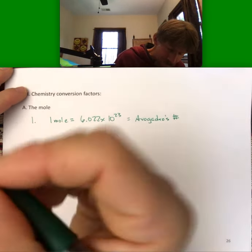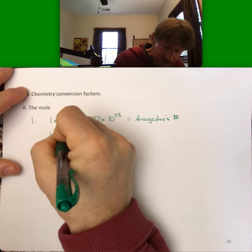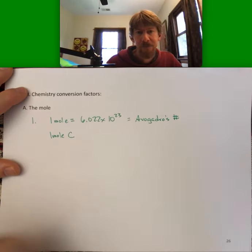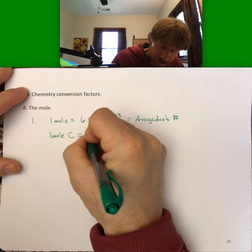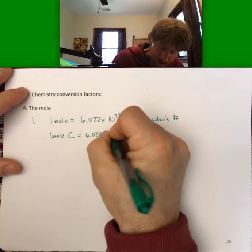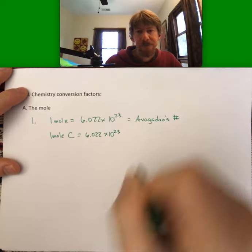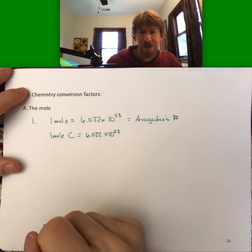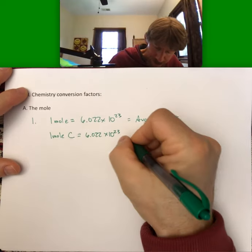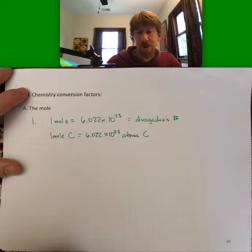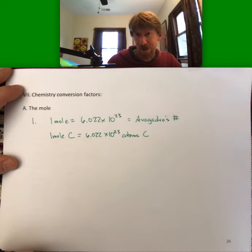So one mole of carbon equals 6.022 times 10 to the 23rd atoms of carbon, since carbon is an atom.